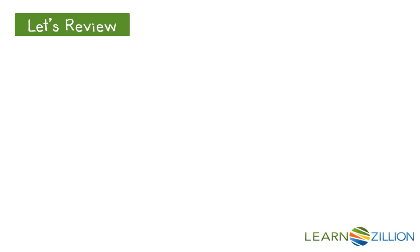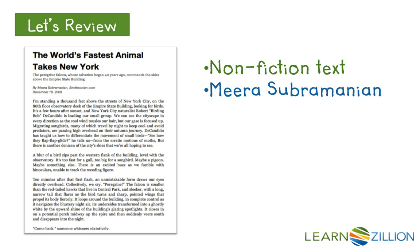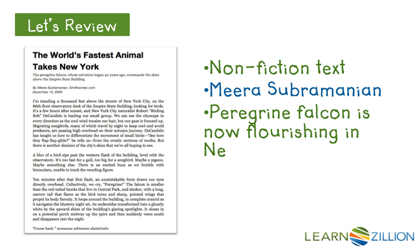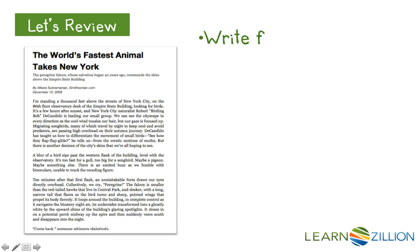Let's review. We've already read the text 'The World's Fastest Animal Takes New York' by Mira Submaranian. It's a non-fiction article in which the author describes how the peregrine falcon almost became extinct, but with the help of scientists, it is now flourishing in New York City. In the article, the author includes a section about songbirds and how they are being killed. Good readers know that an author writes for multiple reasons, and the author includes specific sections and details to help make his or her point.